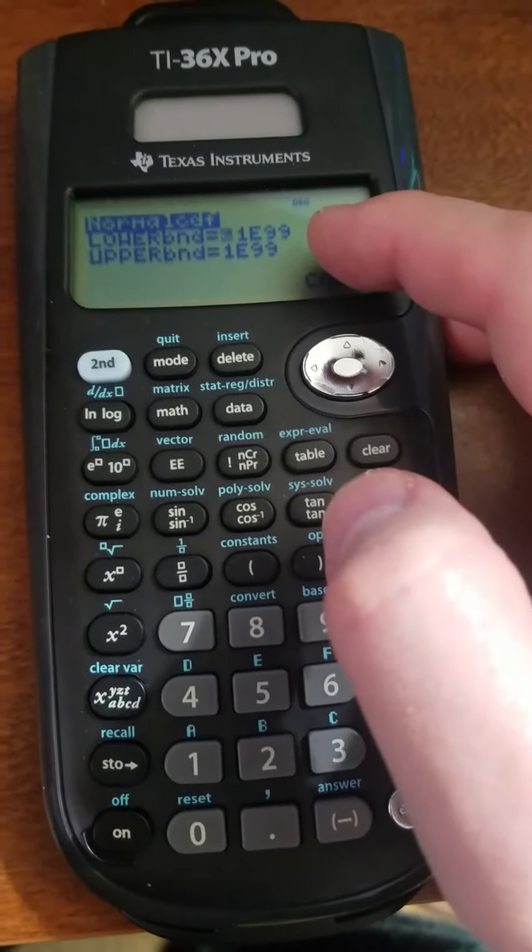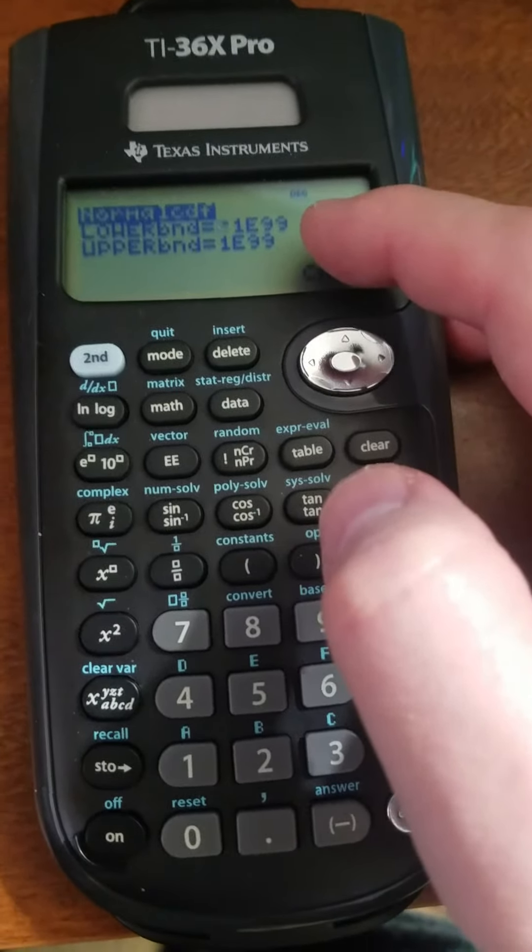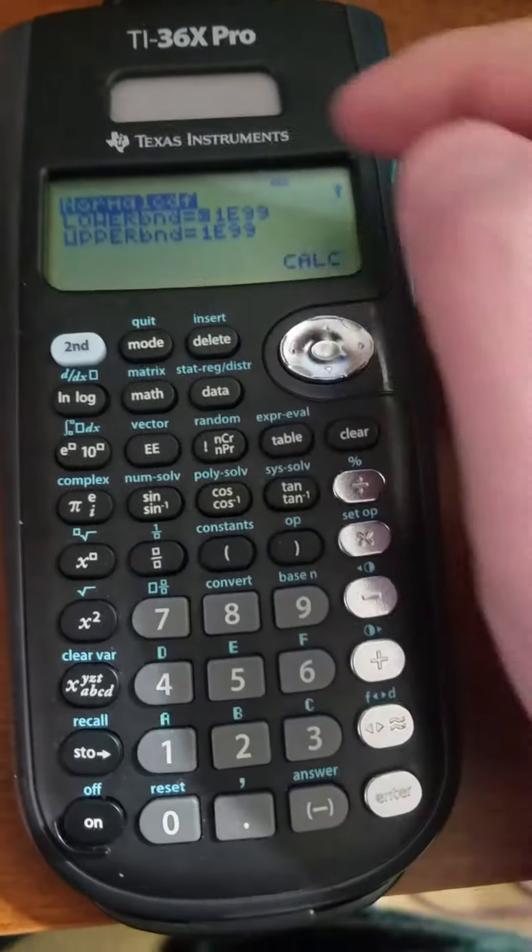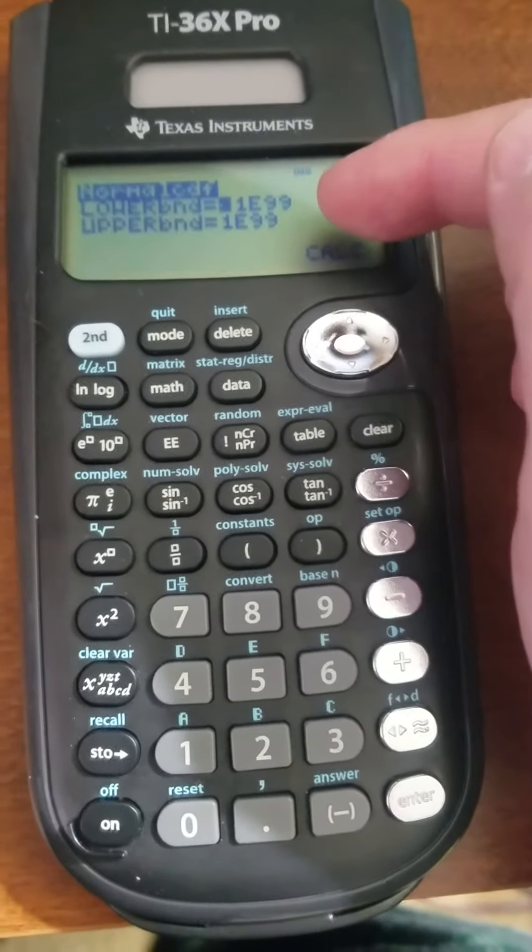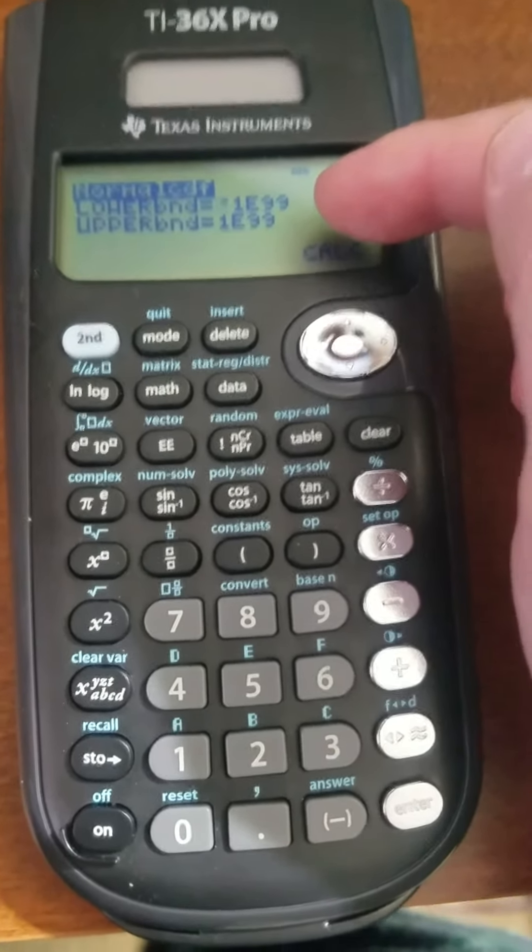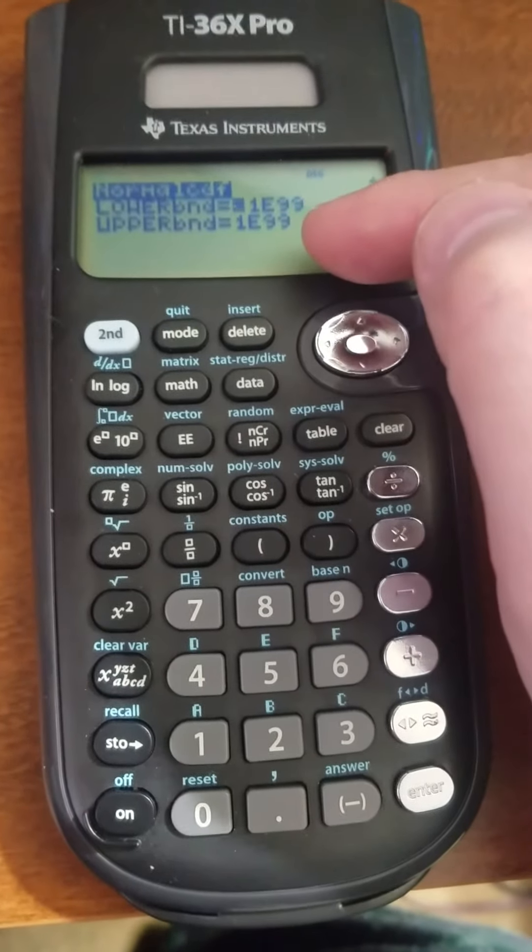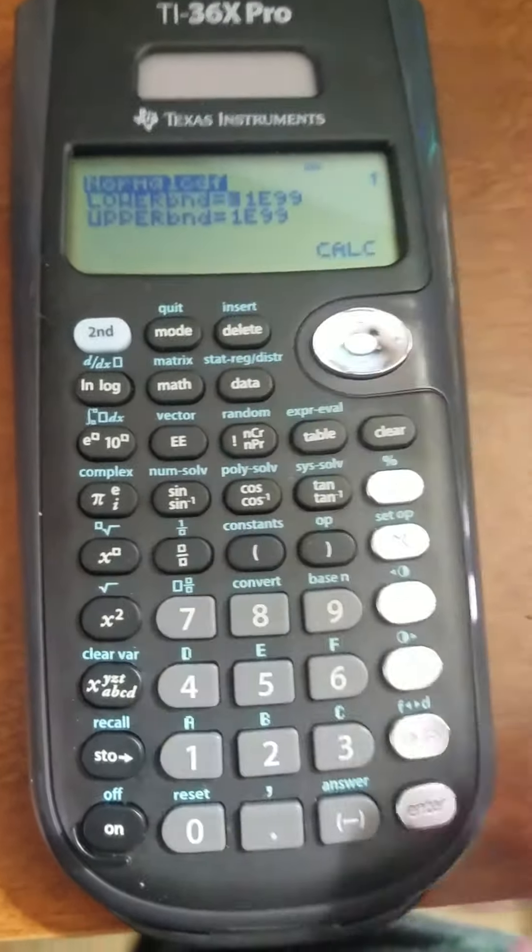This would be my left bound and my right bound, as I'm calling it in that other video. Negative 1e99, that's negative 10 to the 99th, is essentially negative infinity. Positive 1e99, that's 10 to the 99th, is essentially positive infinity.